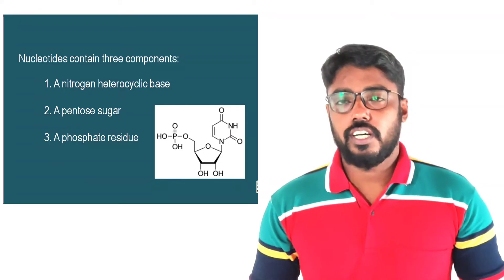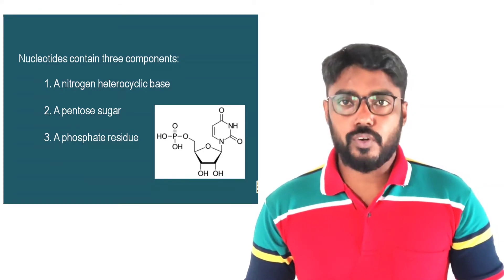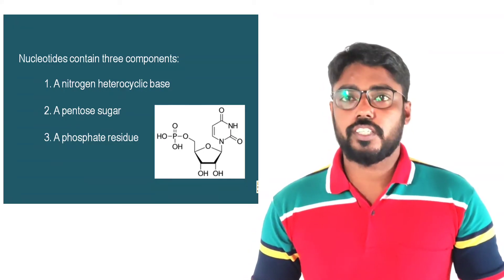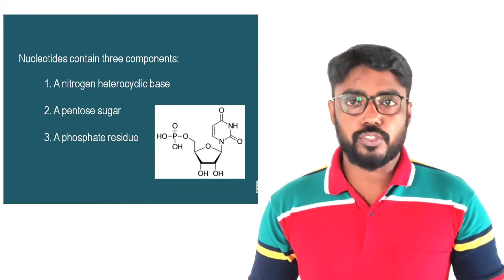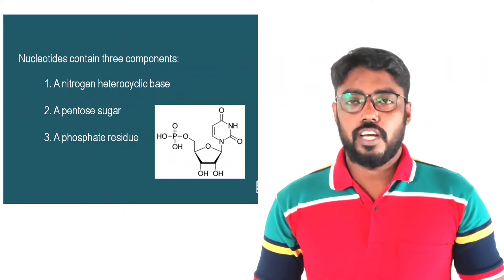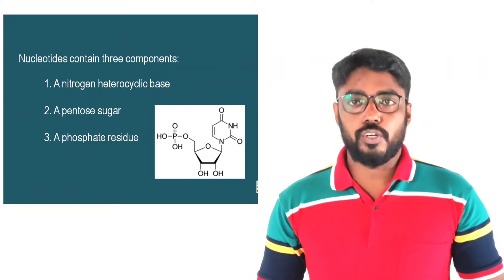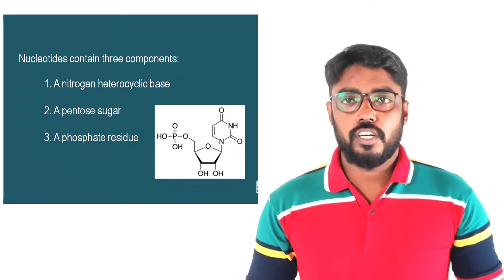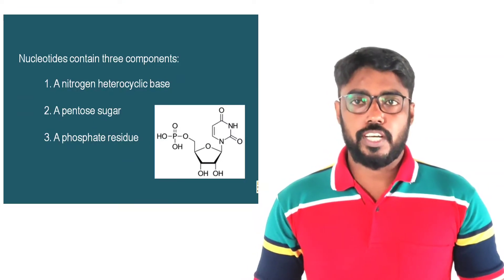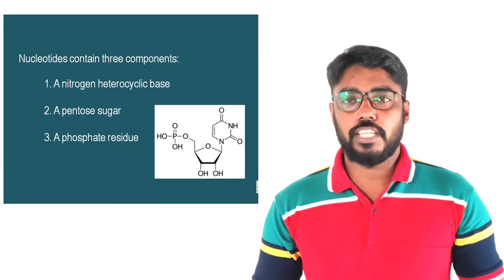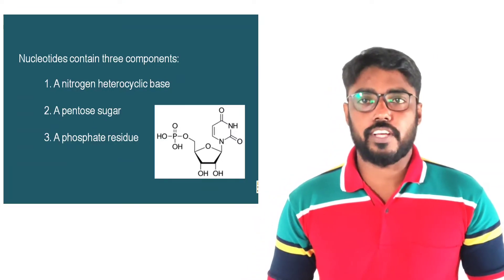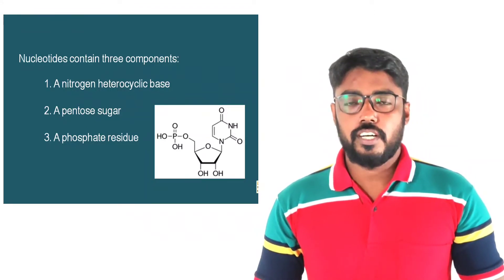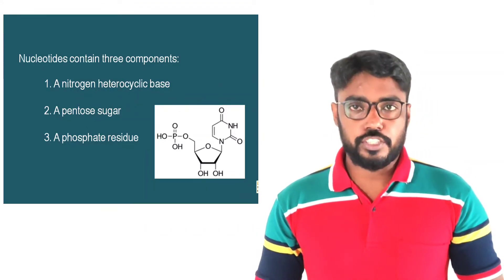RNA, or ribonucleic acid, is made up of monomers called nucleotides, or ribonucleotides. Each nucleotide has mainly three components: a nitrogenous base, a pentose sugar, and a phosphate residue.